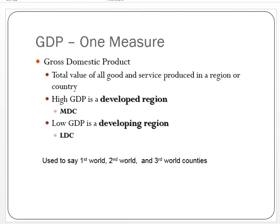One measure used to understand economic status or development is the gross domestic product. On the CIA World Factbook, there are several different GDPs, each looking at different aspects of the economy, but in general it is the value of all the goods and services that a region produces. A high GDP indicates a more developed country, or MDC, while a low GDP indicates a less developed country, or LDC.